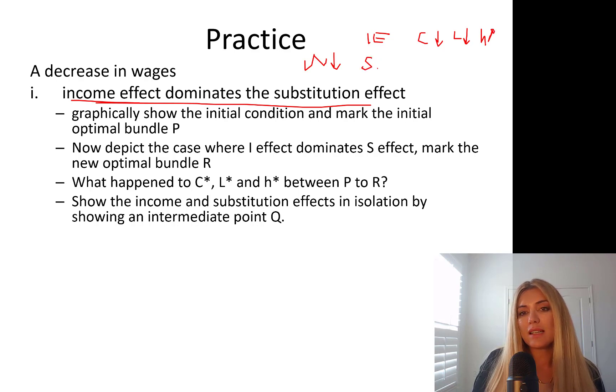Substitution effect says that wages are lower. Leisure is cheaper now. Increase leisure. Substitute away from things that got relatively more expensive. Consumption is relatively more expensive because leisure is relatively cheaper. So I did the arrow wrong way. Consumption needs to go down. Leisure goes up. Hours goes down.